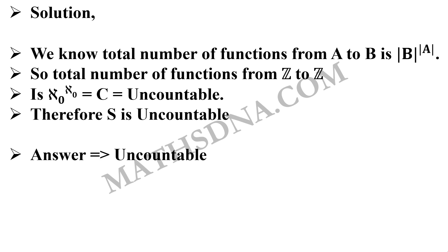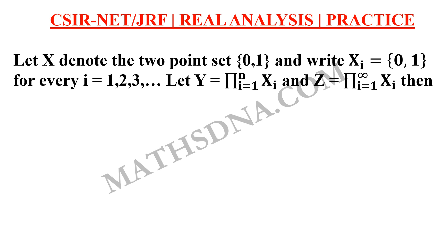Now one question for your practice. Let X denote the set at each point {0, 1}, and write Xᵢ = {0, 1} for i running from 1, 2, 3 and so on. Let Y be defined as the product of Xᵢ for i running from 1 to n, and Z be defined as the product for i running from 1 to infinity of Xᵢ.